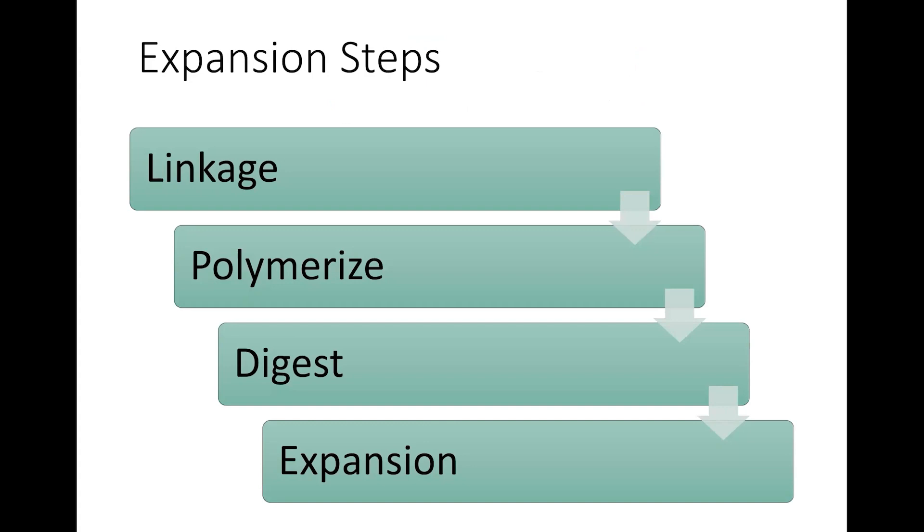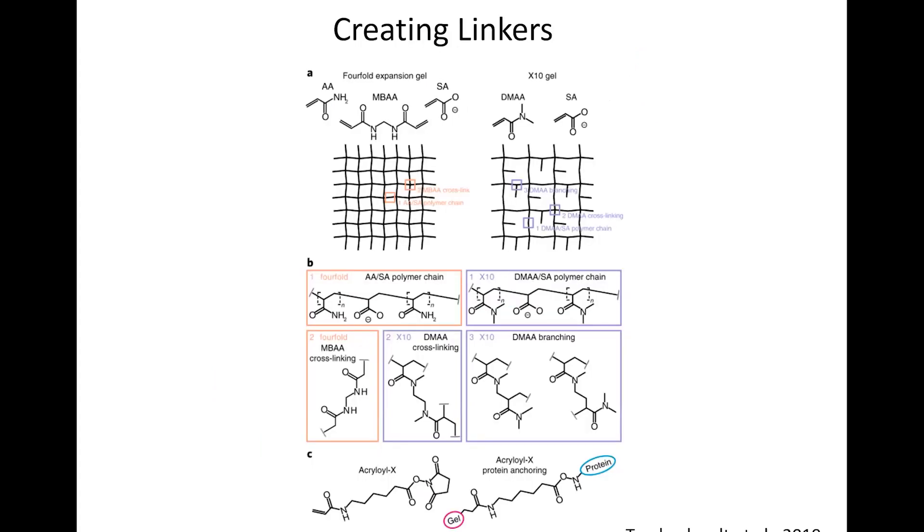So as I went over earlier, these are the different steps. First we create linkers in which we use amine groups to link into the polymer. And there are a variety of methods to do this. You can see in the Acrylyl-X on the bottom, it will link the protein directly to the gel so that when the digestion occurs, it will move uniformly with the gel.